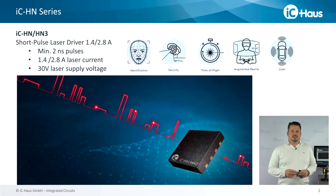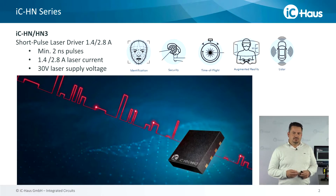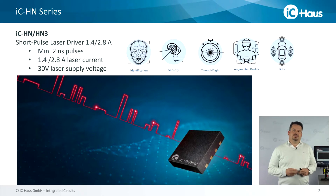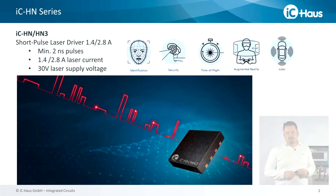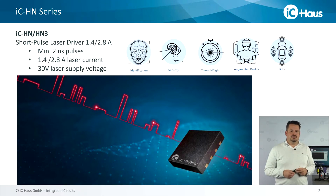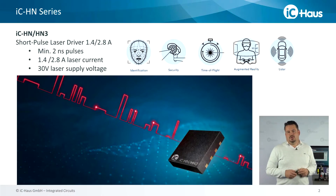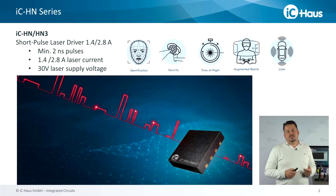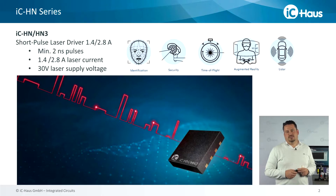The switch, and therefore the pulse length, is controlled via the LVDS input. The laser diode current is determined by the voltage at the control input. The output channel can be operated up to 3A pulsed current depending on frequency, duty cycle and heat dissipation. Laser supply voltages of up to 30V are possible, and this allows you to stack or connect in series more than just one laser device.